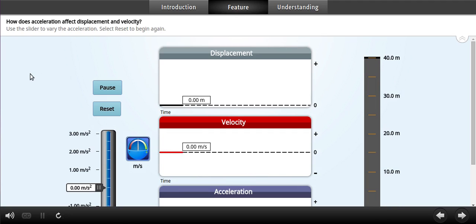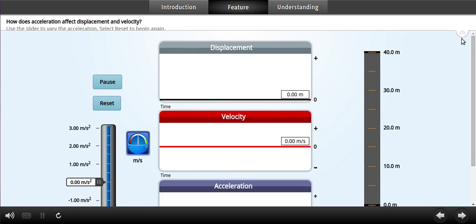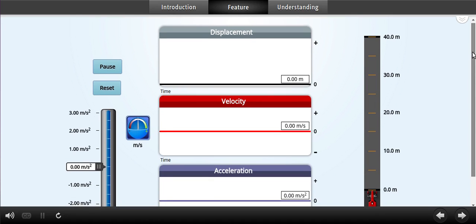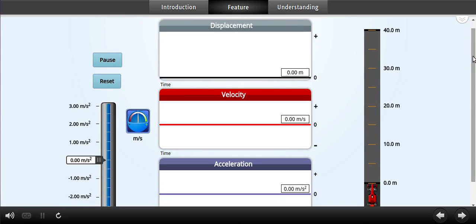How do displacement and velocity change as you adjust the acceleration of a race car? Adjust the acceleration of the race car by moving the slider. Look at the graphs to see how displacement, velocity, and acceleration change over time. You can experiment with changing the car's acceleration or pause the animation to look more closely at the results. Click Reset to begin again.